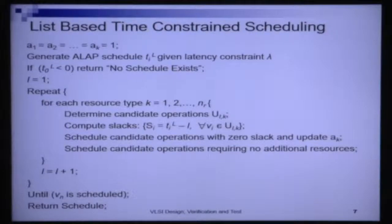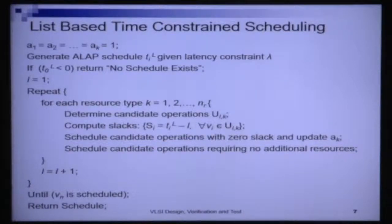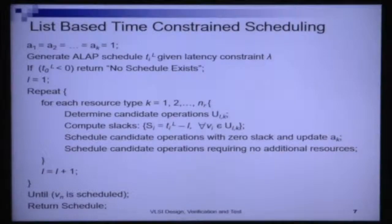After scheduling the 0-slack operations, suppose fewer than a_k resources were required — meaning we have some residual resources remaining. These residual resources can be used to schedule additional operations. Since we are not increasing the number of resources required in the schedule, if we have remaining resources, we schedule candidate operations requiring no additional resources. After doing this, we increment time and repeat until the schedule is done.